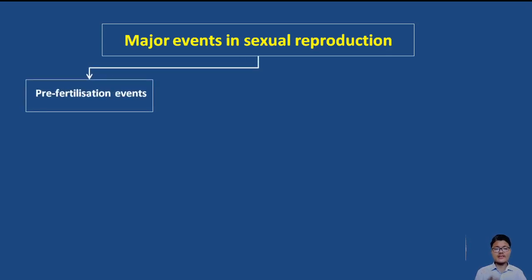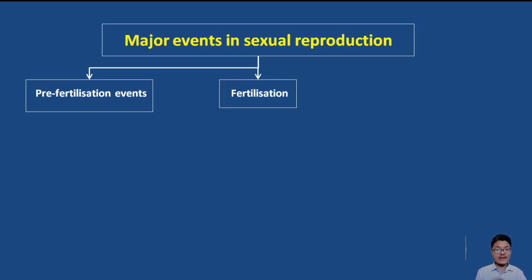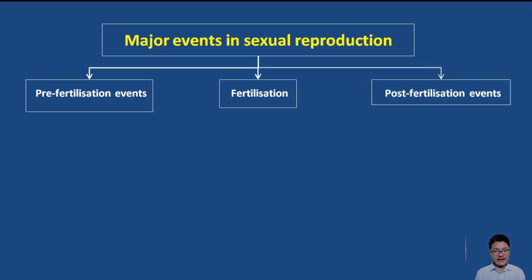There are three main major events occurring in sexual reproduction. First, pre-fertilization events — 'pre' referring to before. Fertilization is the fusion of male and female gametes, so before fertilization there are many events which occur, known as pre-fertilization events. After fertilization — after the fusion of male and female gametes — there are other events which occur, known as post-fertilization events. 'Post' refers to later.